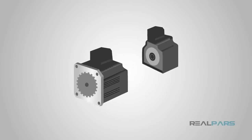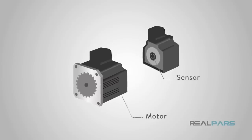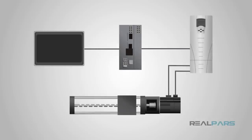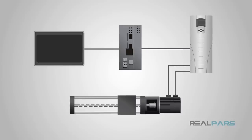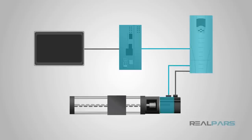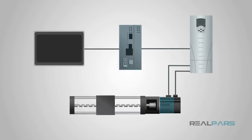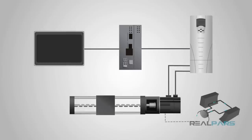The servo motor utilizes a regular motor and couples it with a sensor for positional feedback. The controller is the most important part of the servo motor, designed and used specifically for this purpose. The servo motor is a closed loop mechanism that incorporates positional feedback in order to control the rotational or linear speed and position. The motor is controlled with an electric signal, either analog or digital, which determines the amount of movement, representing the final command position for the shaft.